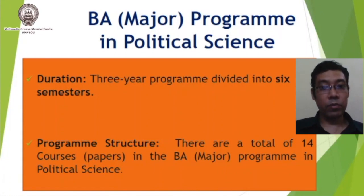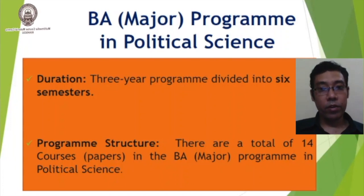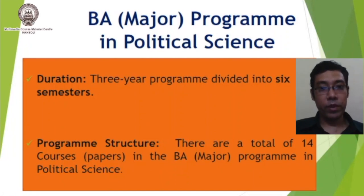Talking about the program structure, we find that there are a total of 14 courses or papers in the BA Major Program in Political Science.